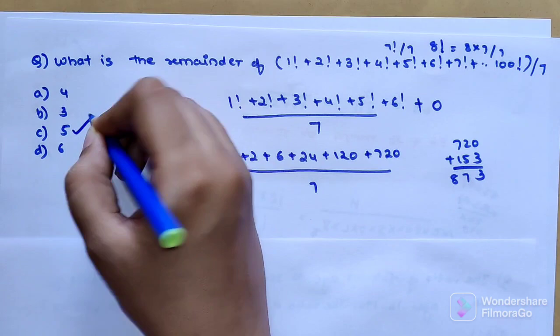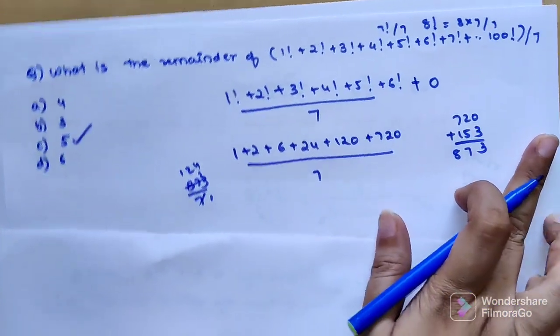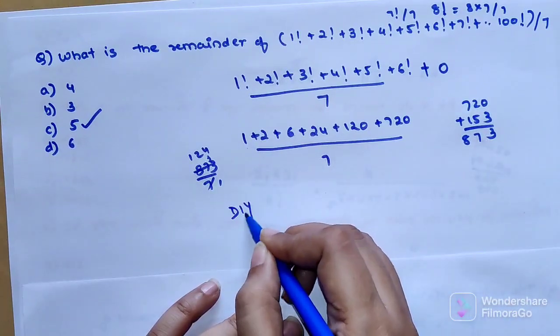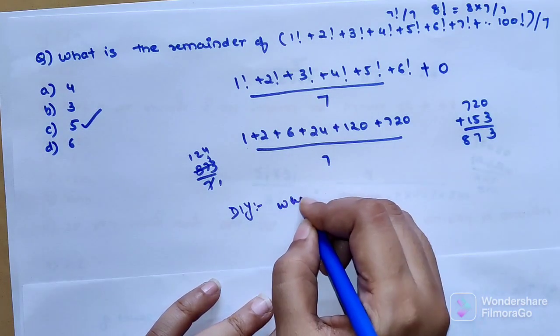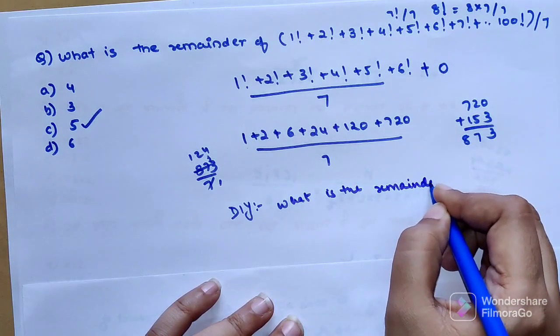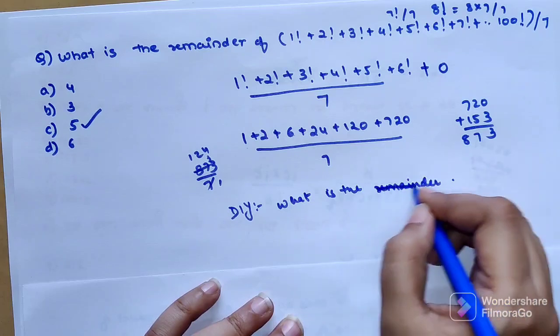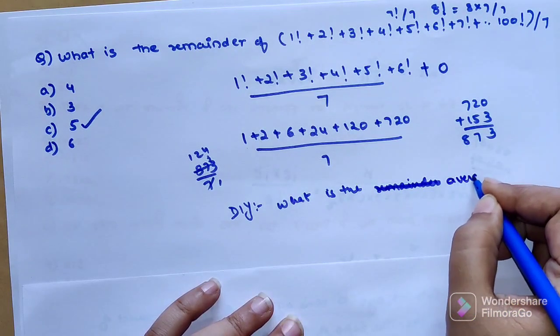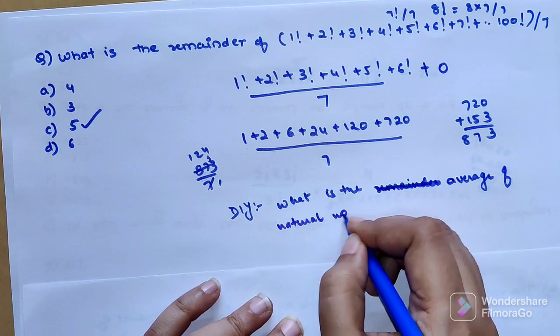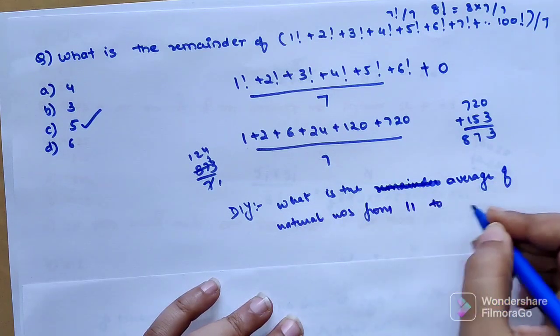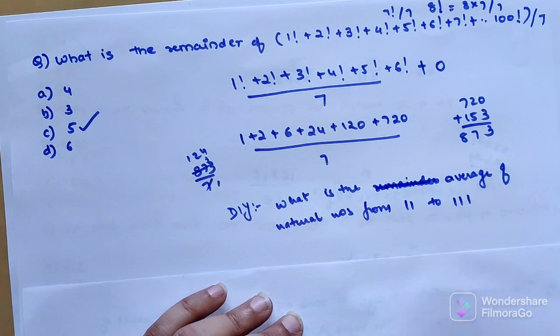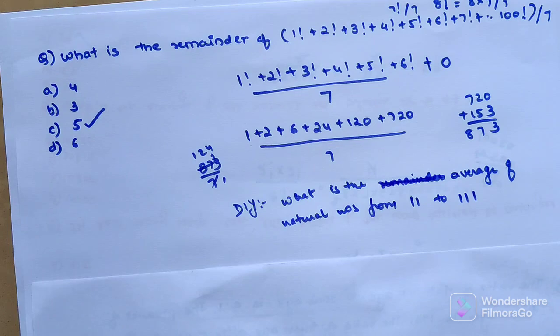Now time for your DIY. I want you all to tell me: what is the average of natural numbers from 11 to 111? Let me know your answers in the comment section. That's it for today. I will see you in the next video. Bye!